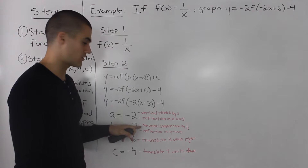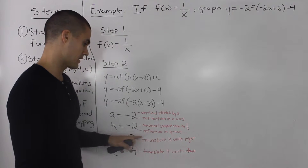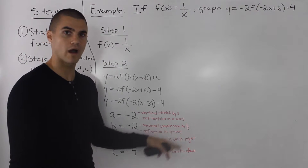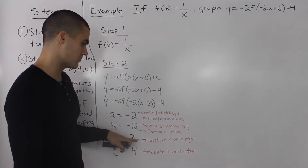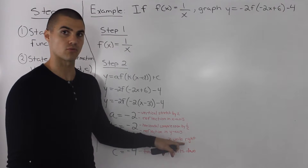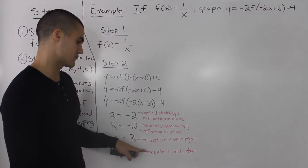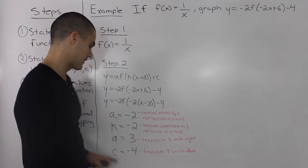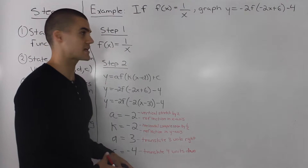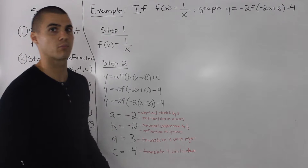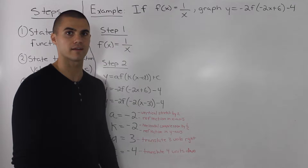Because k is negative 2, there is a horizontal compression by a factor of 1 over 2, and because it's negative, there is a reflection in the y-axis. The d value of positive 3 means the function translates three units to the right, and the c value of negative 4 means the function translates four units down. The horizontal and vertical translations are especially important when graphing 1 over x, so we'll elaborate more on that in that step.